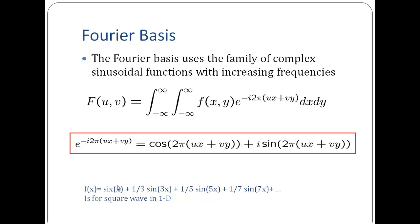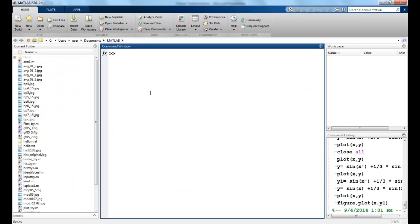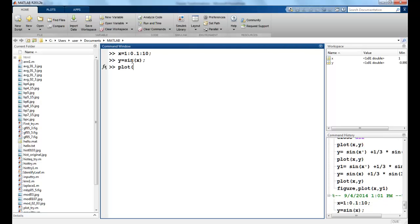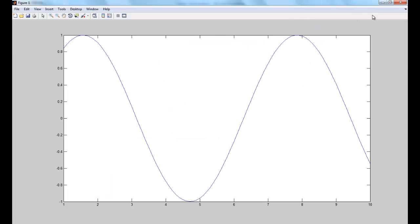So let's look at this in MATLAB. So suppose I define a function. So suppose I take a value of x, such that it varies from 1 to 10 at a difference of 0.1. Now I define y as sine of x, and I say plot x, y. I have a pattern like this.